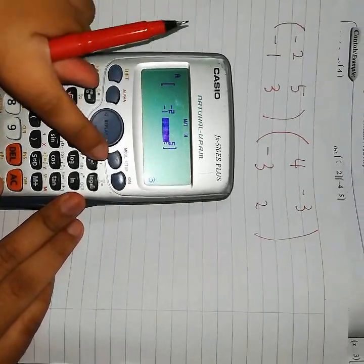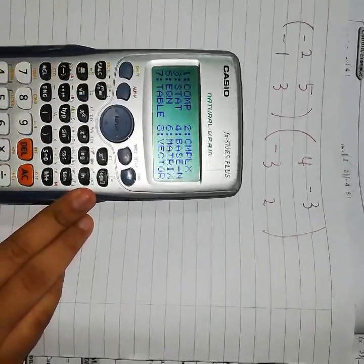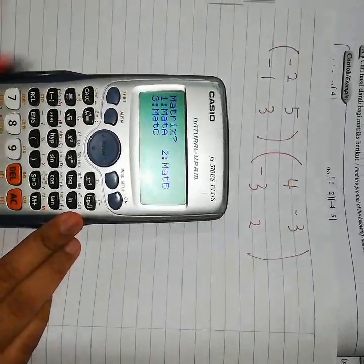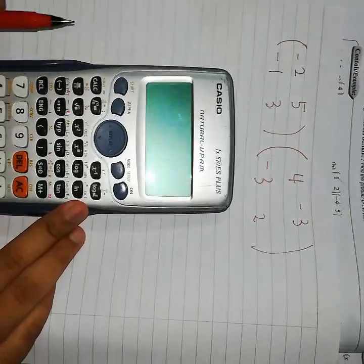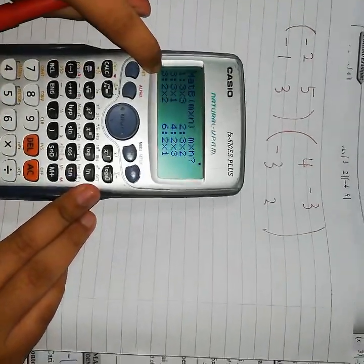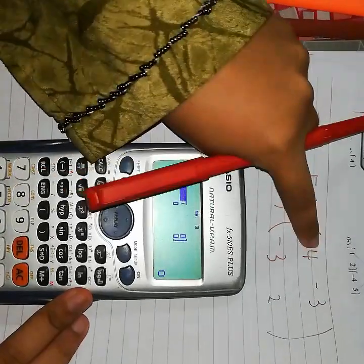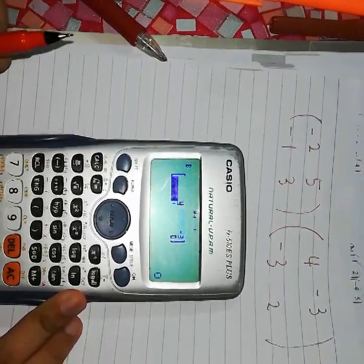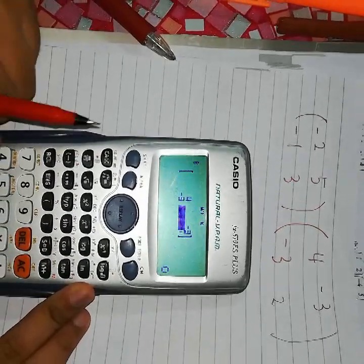Lepas tu, pergi dekat mode balik. Dan pergi ke nombor 6 balik, Matrix. Dan tekan mat B. Lajur yang sama, baris yang sama. Jadi, isikan di tempat kosong. Empat, negatif 3, negatif 3, dua.